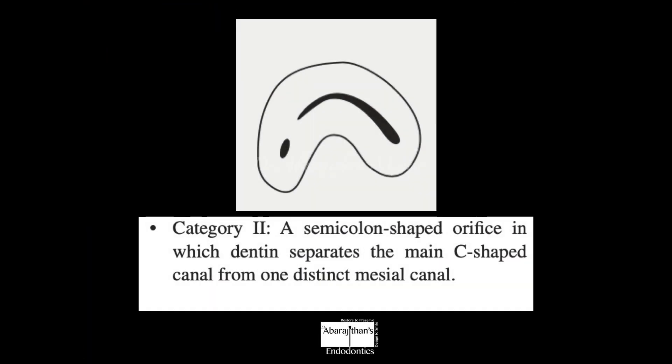There is always a communication on the buccal side, so even when you see two roots separately you need to be prepared for a C-shaped communication. C-shaped canals can be classified in different ways, with two to three popular classifications covering three to five canal types. The two most common types are: Type 1 — a complete C with fusion of the mesiobuccal to the distobuccal and separation on the lingual side only; and Type 2 — a semicolon-type C-shaped canal, which we will discuss today.